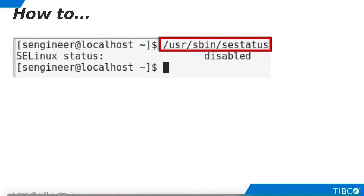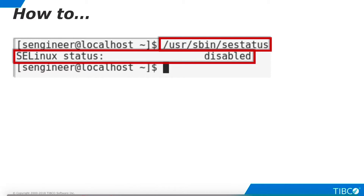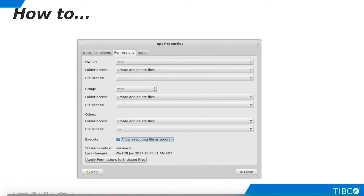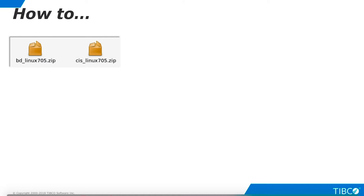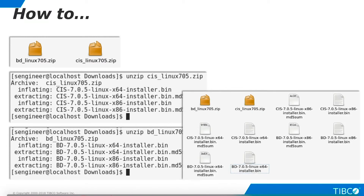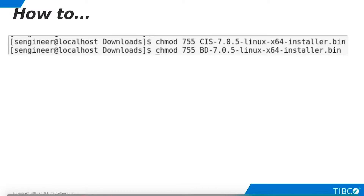Check for the proper setting of Security Enhanced Linux. Enter the command shown here. The setting must be either permissive or disabled. Otherwise, follow the installation guide instructions to edit the value. See the installation guide for more details. For whatever folder you want to install into, make sure you have read, write, and execute privileges. The opt folder shown here is the default installation folder. In addition to the two installation zip files, you will need to obtain a license file. Unzip the TDV server file and the business directory file. Your directory will now contain 32-bit and 64-bit installers and checksum files for each component.